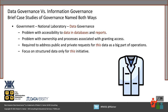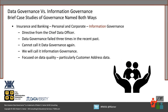Another organization — one of the US national laboratories — focused on accessibility to data. They focused on structured data, called it data governance from the beginning, and continue to call it data governance today. Another example: one of the larger insurance companies here in the United States. When I came in, they called it information governance — a directive from the person at the top of data within the organization. When I asked why, he said, 'Because we've tried data governance three times and it failed each time, so we cannot call it data governance again.' They focused on the quality of structured data but use the name information governance today because they've been more successful with it.